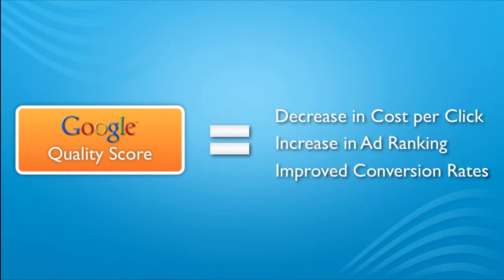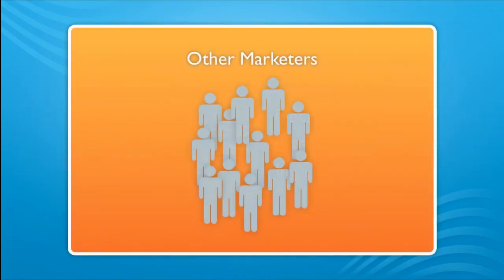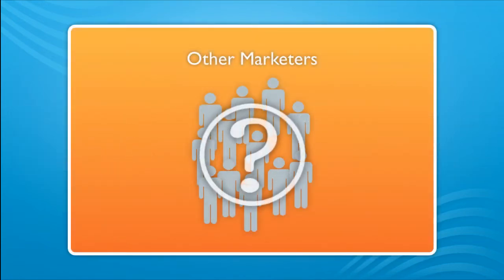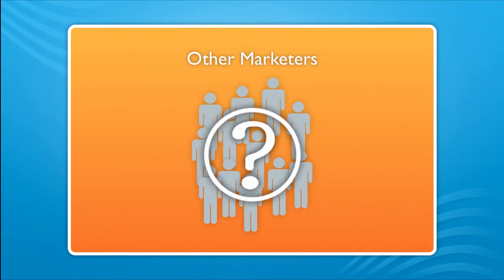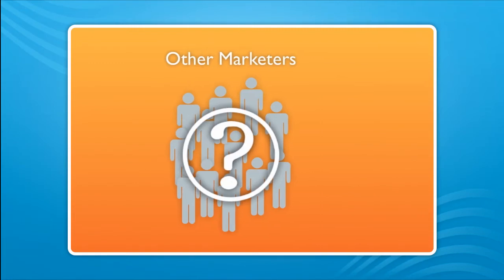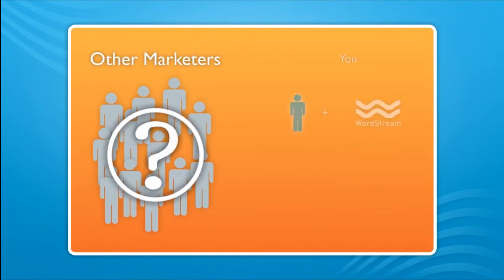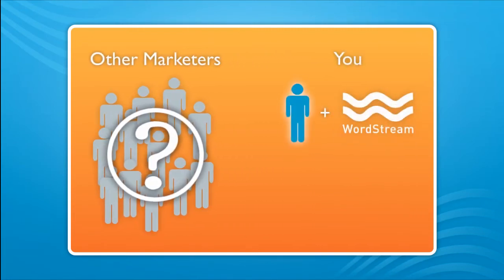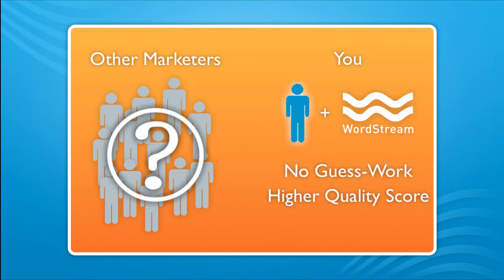Many marketers make the mistake of simply raising their budget or blindly deleting poorly-performing keywords and ads when their campaigns aren't producing. But WordStream eliminates the manual guesswork in quality score optimization and helps you adhere to Google's relevance standards so you get the best return on your investment.